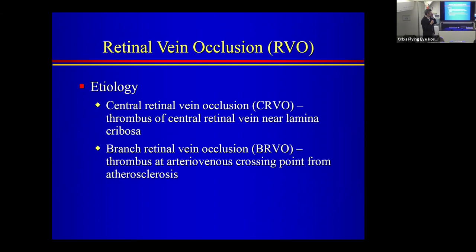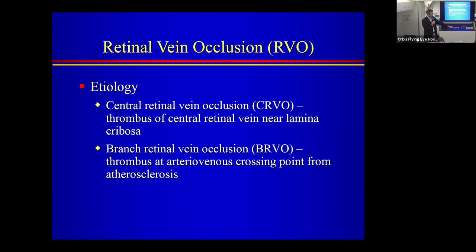Retinal vein occlusion — I'll use the abbreviation RVO, meaning both branch and central. In a central retinal vein occlusion (CRVO), there's a thrombus or clot at the central retinal vein near the lamina cribrosa, as the vein exits the optic nerve. In branch retinal vein occlusion (BRVO), there's a clot at an arteriovenous crossing point where the retinal artery crosses over the vein, causing compression. Typically as you get older, there's more compression and a clot can form at that crossing point.